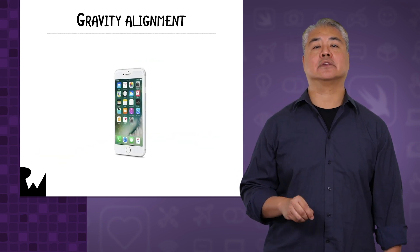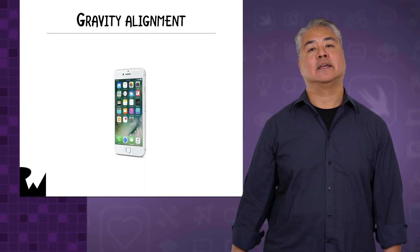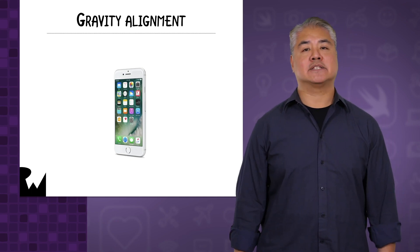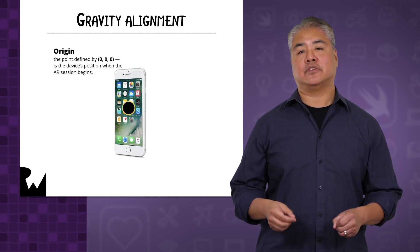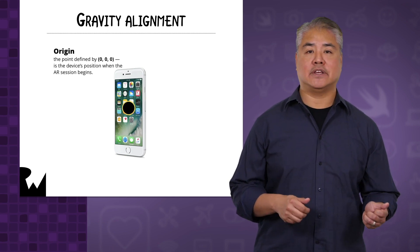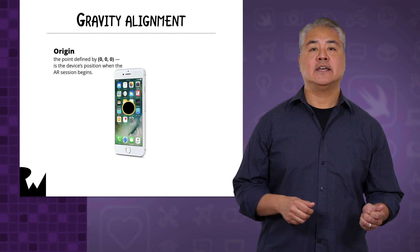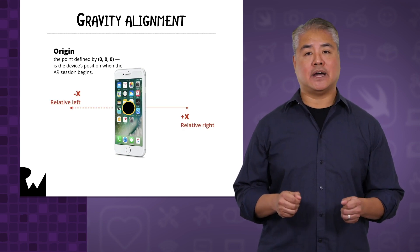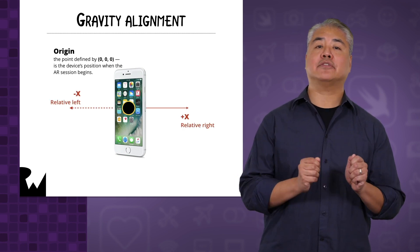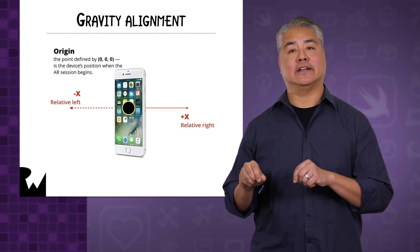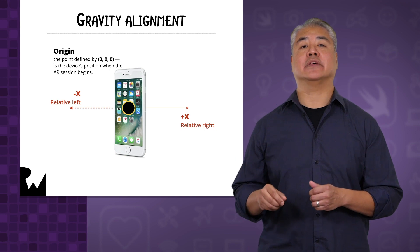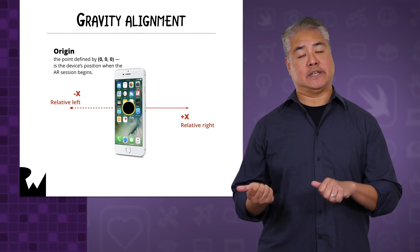The first one is called Gravity Alignment. In all ARKit alignment settings, including Gravity, the origin is where the device is at the start of the ARKit session. The X axis is defined by the position of the left and right sides of the device at the start of the ARKit session, with X increasing as you go right and decreasing as you go left.